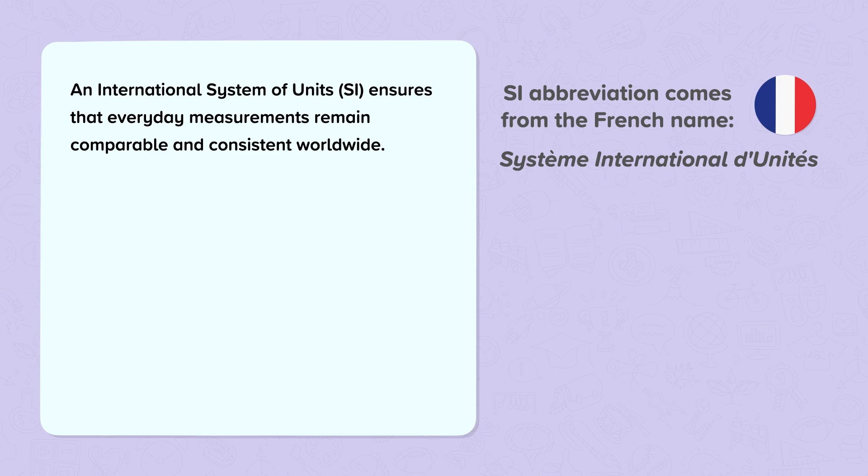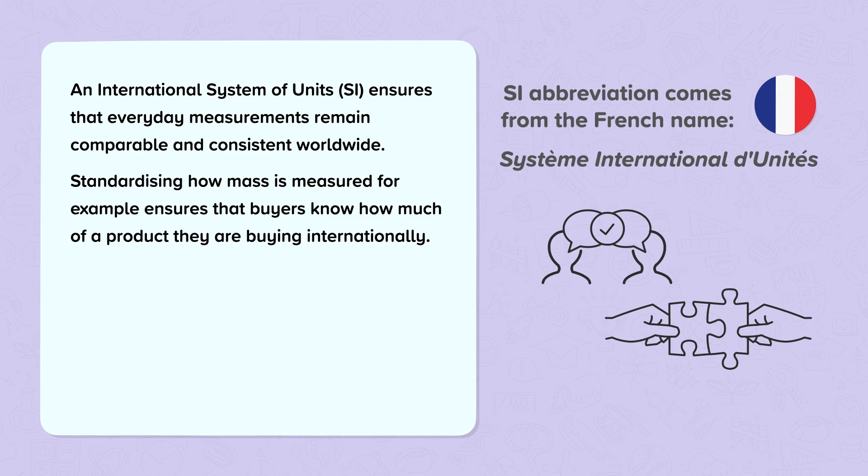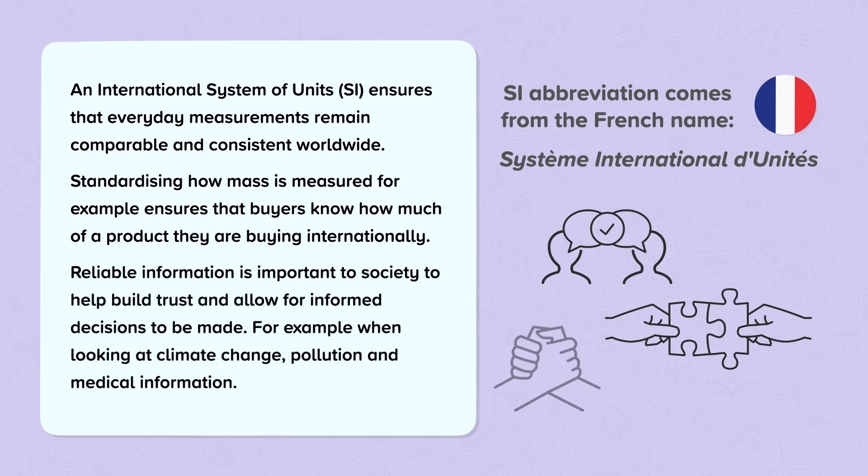An International System of Units ensures that everyday measurements remain comparable and consistent worldwide. Standardising how mass is measured, for example, ensures that buyers know how much of a product they are buying internationally. Reliable information is important to society to help build trust and allow for informed decisions to be made, for example when looking at climate change, pollution and medical information.